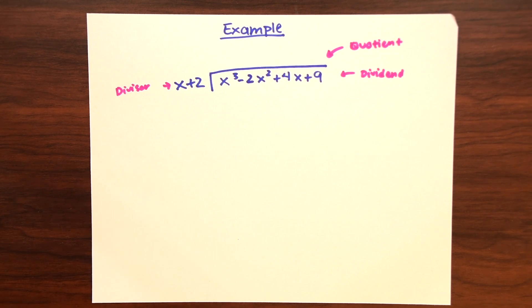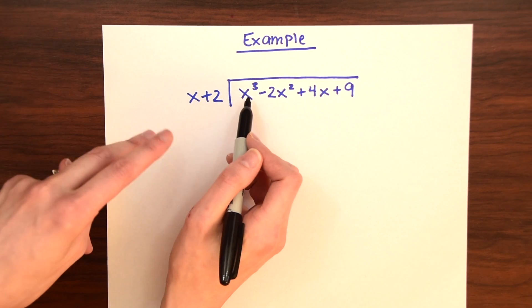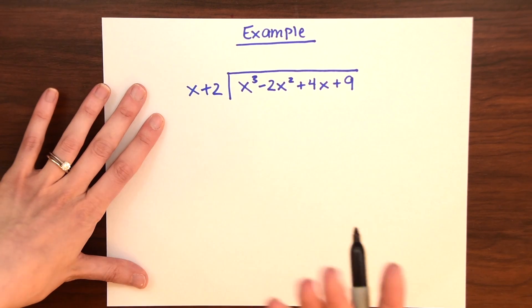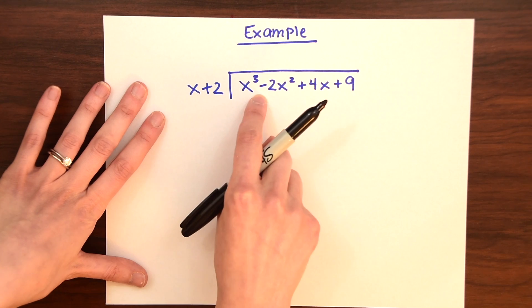So in this example, it happens to have a remainder at the end. So we'll see how that looks. First, let's just see how many times x can go into x cubed. So what times x will give us x cubed? x squared. So let's write x squared.